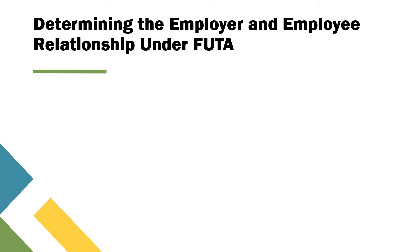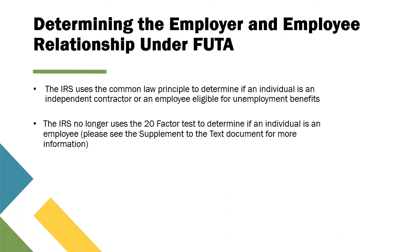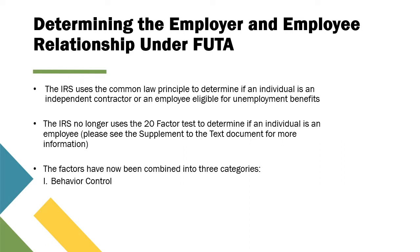The IRS uses the common law principle to determine if an individual is an independent contractor or an employee eligible for unemployment benefits. The IRS no longer uses the 20-factor test; the factors have now been combined into three categories: behavioral control, financial control, and relationship of the parties.